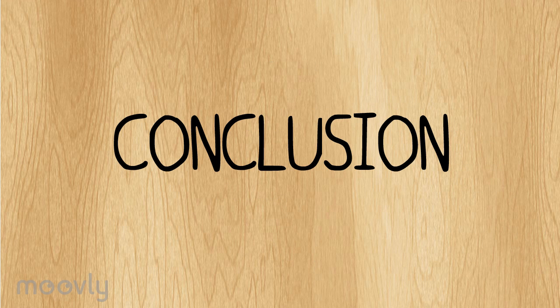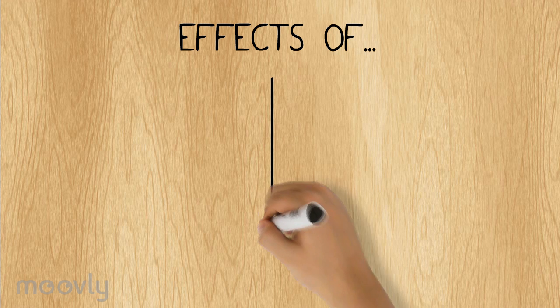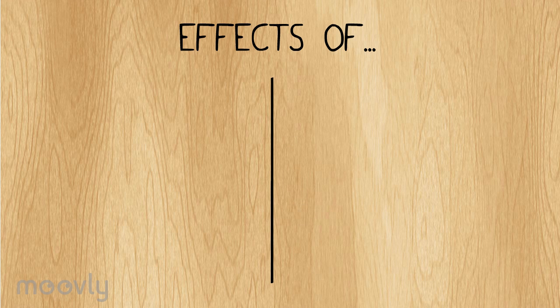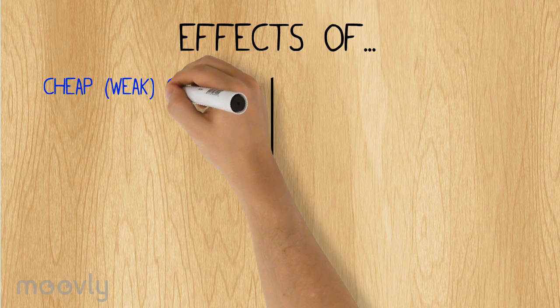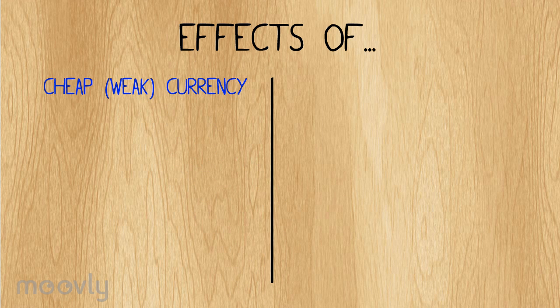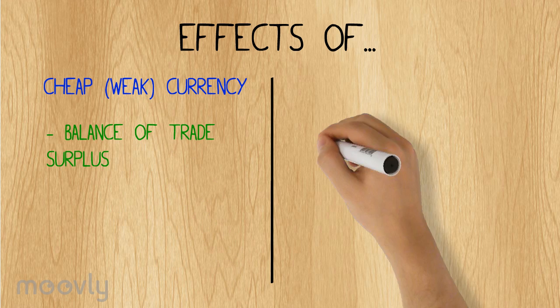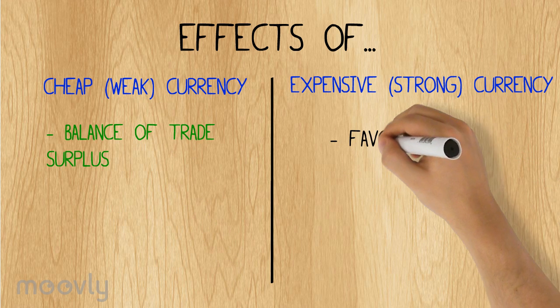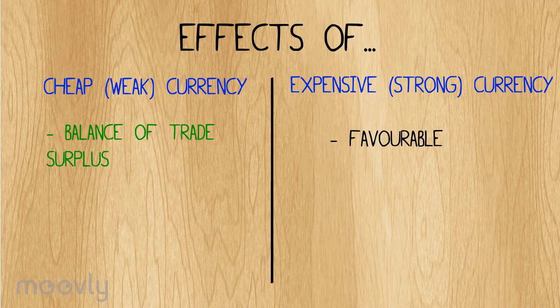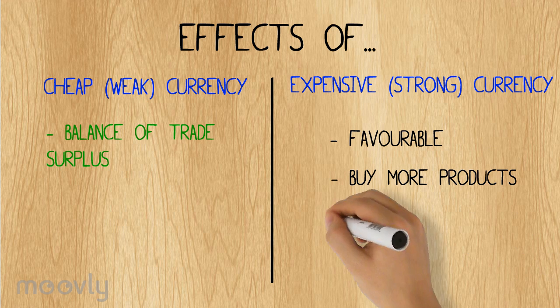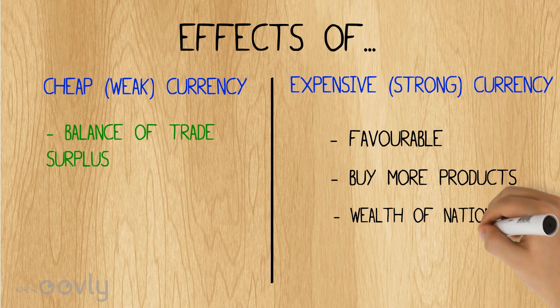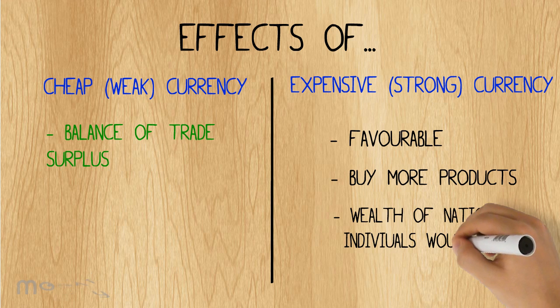So, to conclude, in respect to China, exchange rates are by nature a self-regulating mechanism. While China in the short run benefits from having a cheap currency, causing a balance of trade surplus, in the long run it could be favorable to have a stronger currency, as they could not only buy more products, but the wealth of the nation and of individuals would increase.